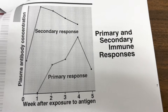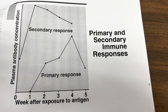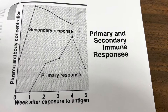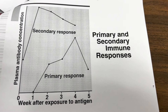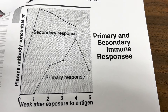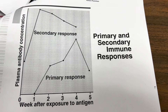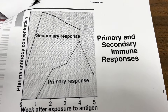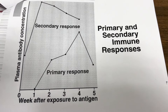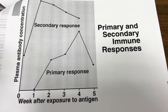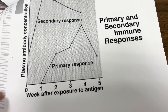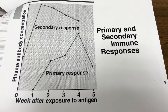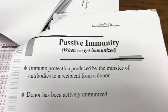Looking at the antibody response graph, you can see how plasma antibody concentration reacts differently in the primary versus the secondary response.